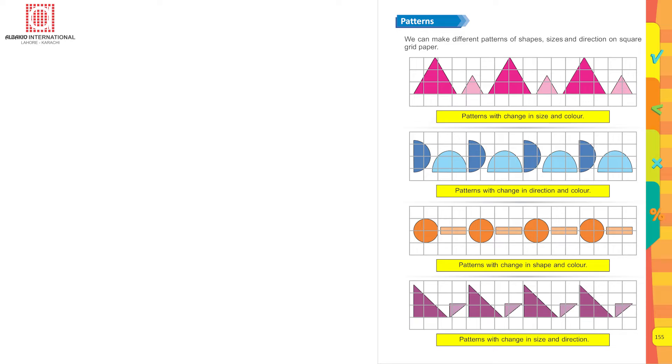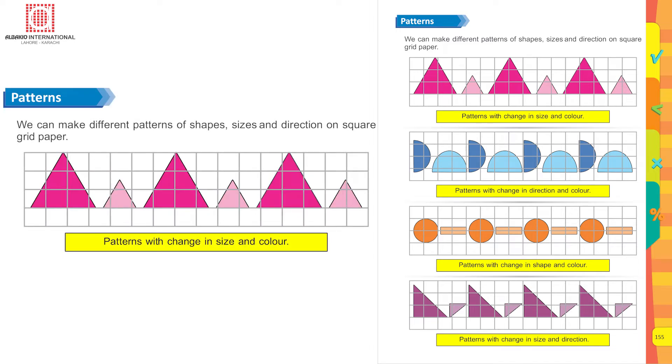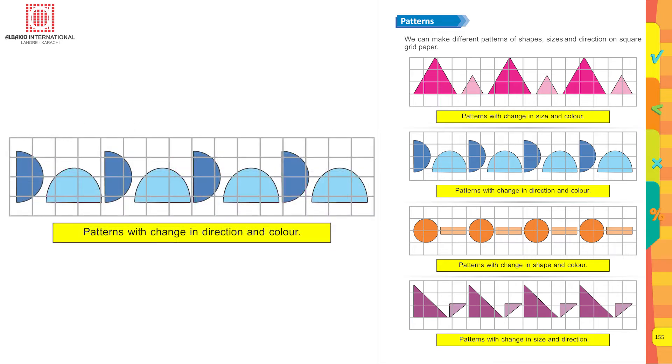Draw the picture that comes next in each pattern. We can make different patterns of shape, size, and direction on square grid paper. Look at the first picture: patterns with change in size and color. If you look at these triangles, one is bigger and the other one is smaller, and the colors are also different.